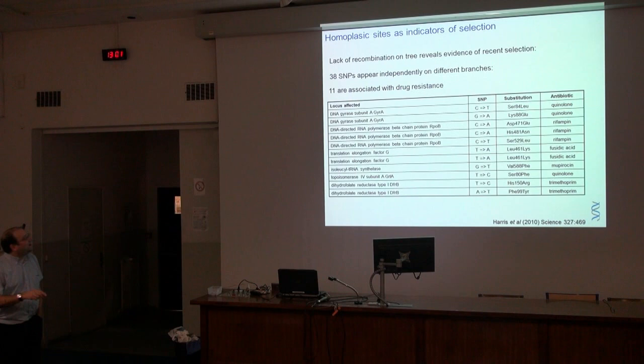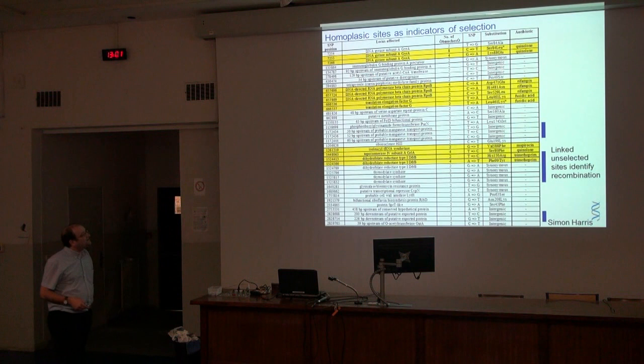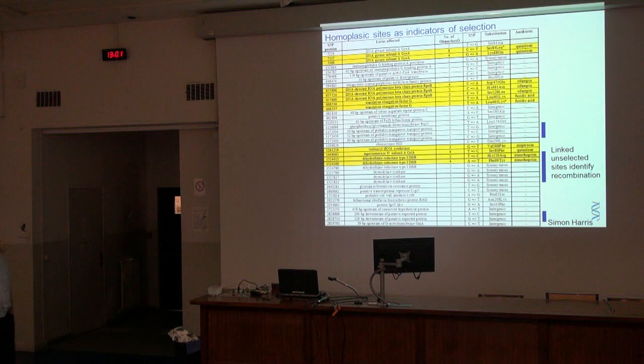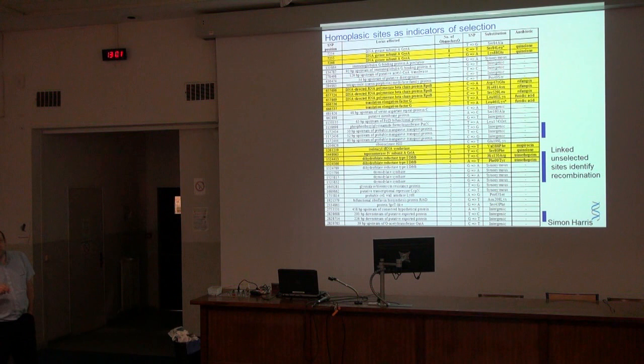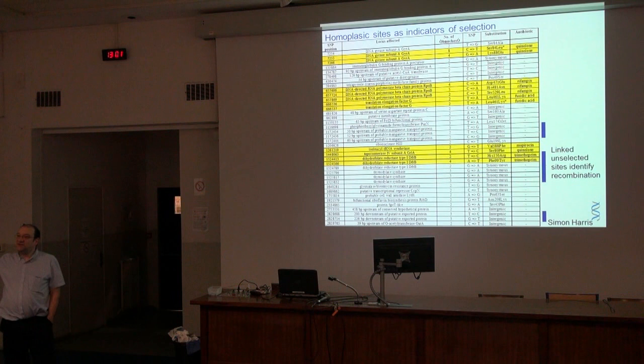The other 27 mutations are probably important as well. If you look at where these 38 SNPs occur in the chromosome, the drug-resistant ones are marked in yellow. You can see clusters of SNPs — for example, two SNPs associated with trimethoprim resistance, and within a few hundred bases, other synonymous changes probably linked by recombination. The drug-resistant SNP has arisen on one branch and been transferred to another by recombination, while other nearby SNPs are probably passengers.